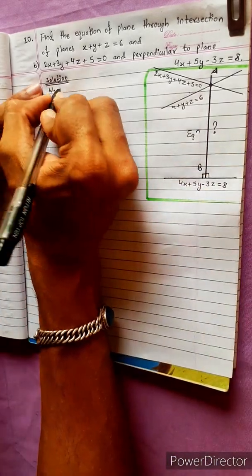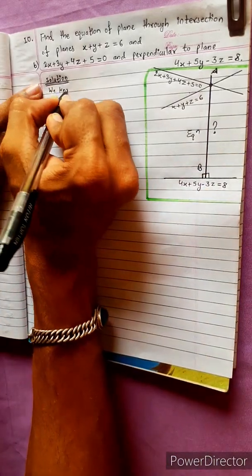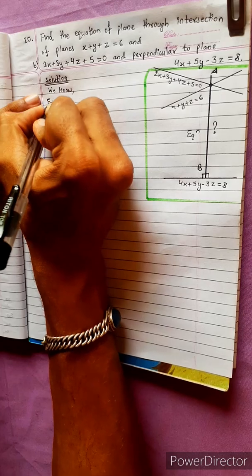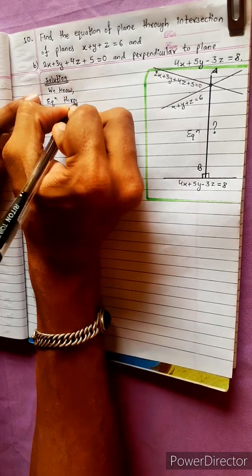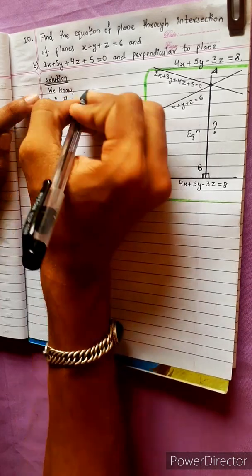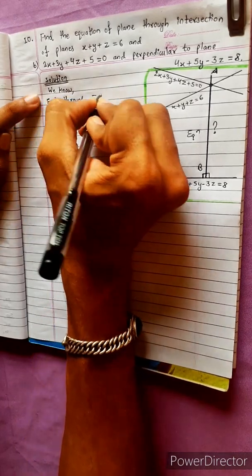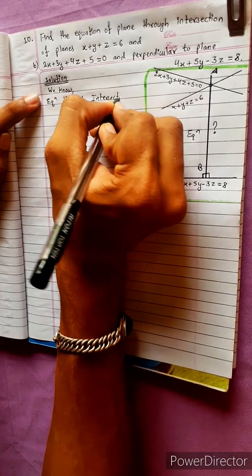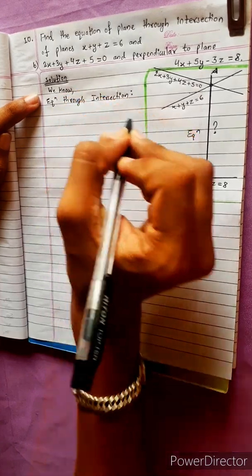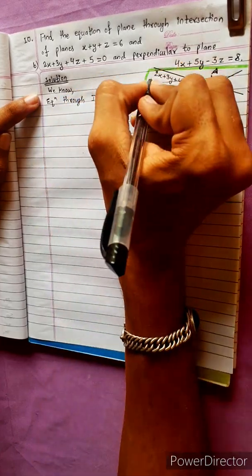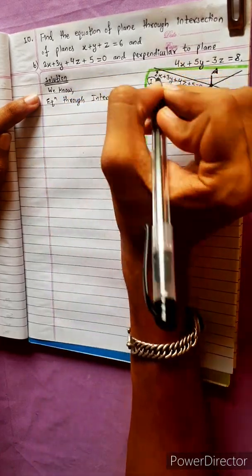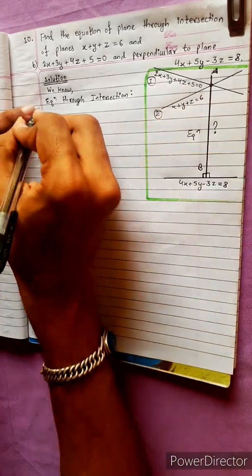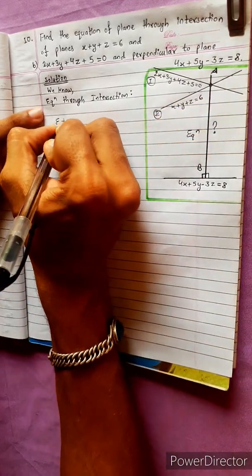We know the theorem. We know the equation through the intersection. Using a shortcut method, the equation can be found.